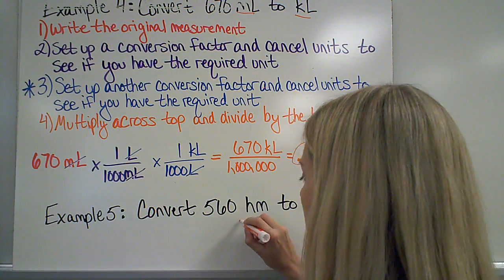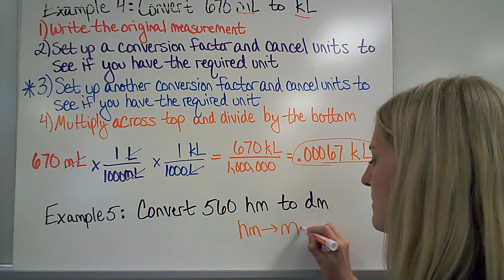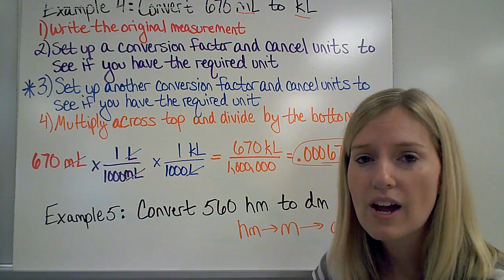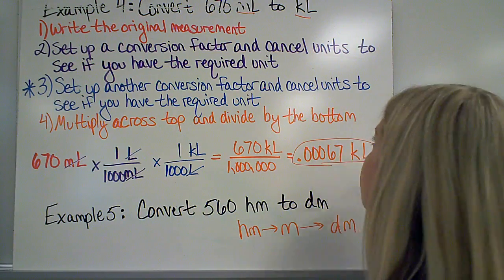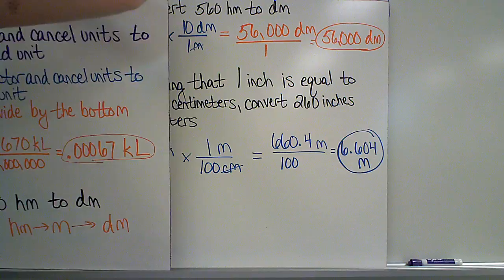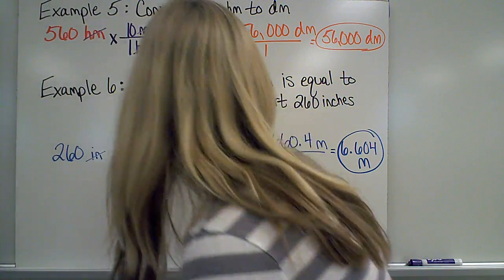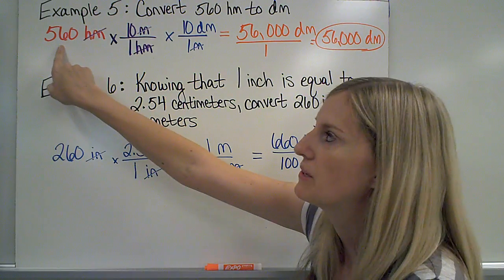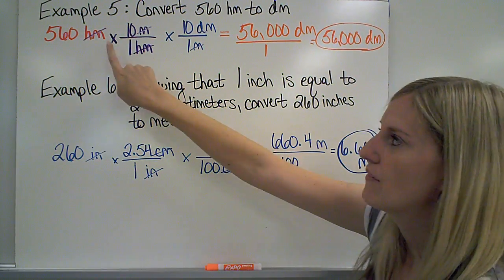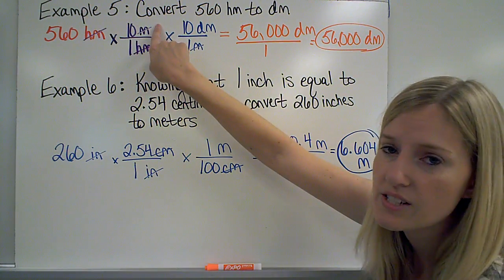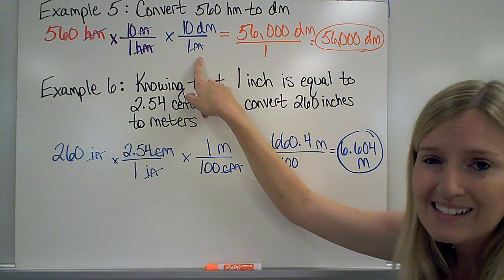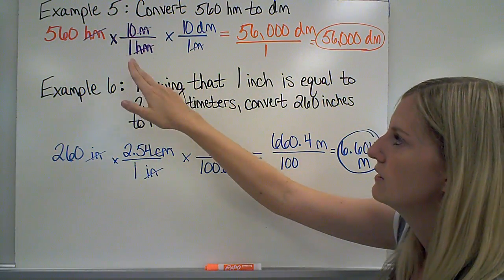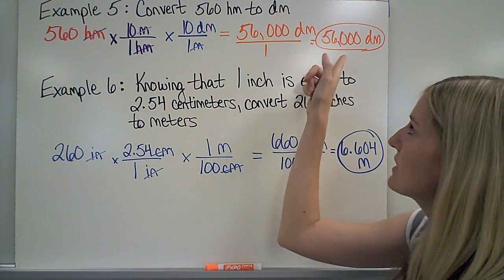Here's a similar example going from a prefix to a prefix. I would go from hectometers to meters, and then meters to decimeters — two steps, two conversion factors. Convert 560 hectometers to decimeters: rewrite the original measurement, multiply by a conversion factor with hectometers on the bottom so they cancel, going to meters first. Then write meters on the bottom of the second conversion factor and decimeters on the top. So 560 times 10 times 10, divided by 1, gives me 56,000 decimeters.